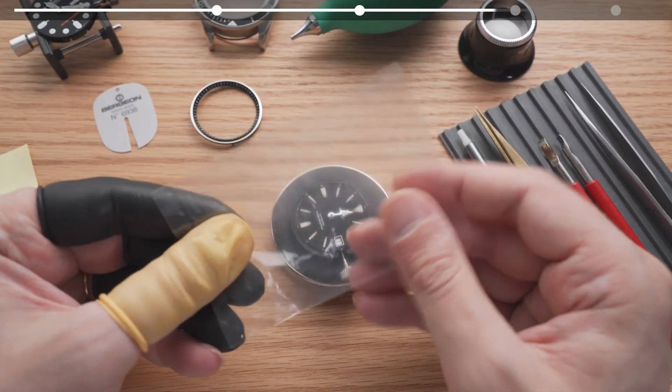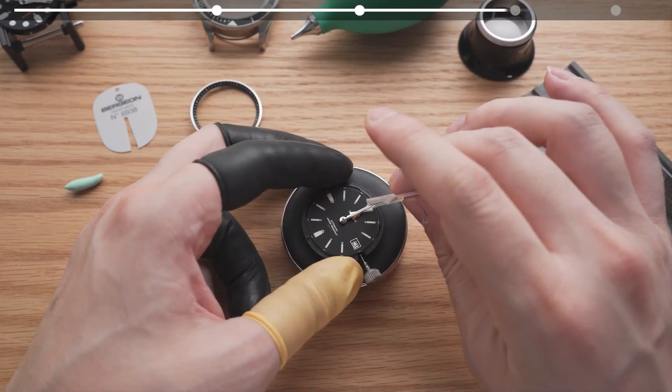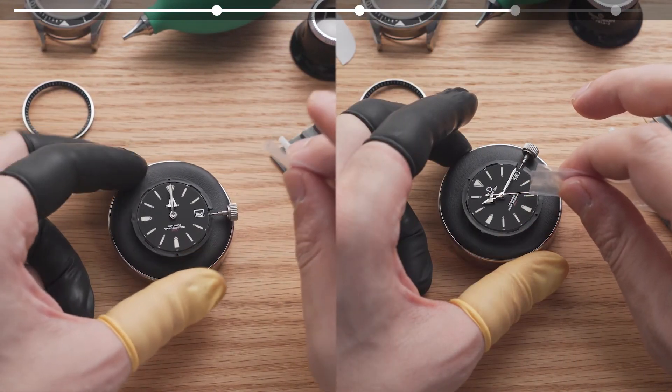A safer method is to use the thin plastic film or even just post-its to gently pull up the tip of the hand upwards. You can use the same technique to adjust the minute and second hand.